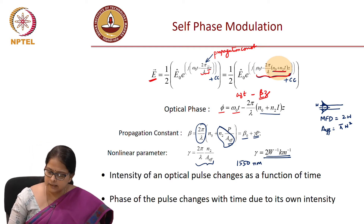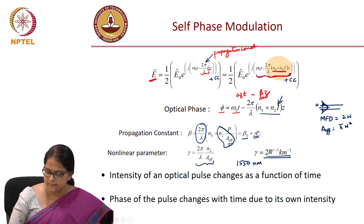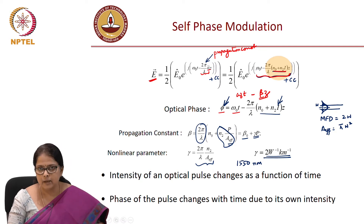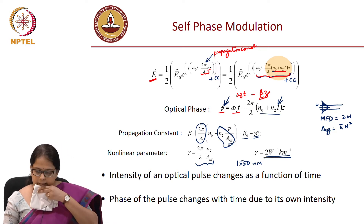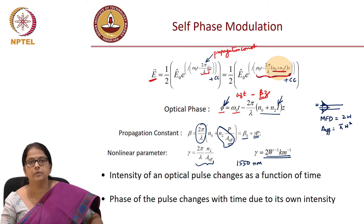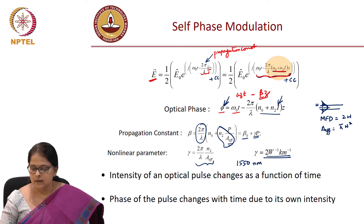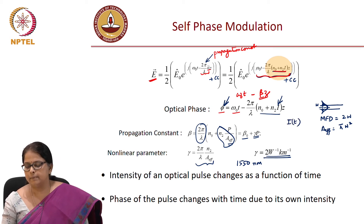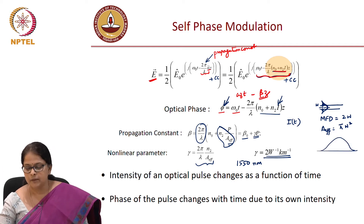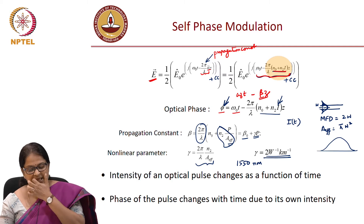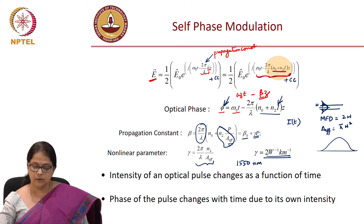Since intensity changes as a function of time, the phase of the pulse will also change as a function of time. We are not talking about the linear phase change due to the carrier frequency itself. Because intensity changes during modulation, there is a phase that changes as a function of time. What is the consequence of that?